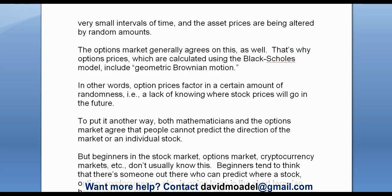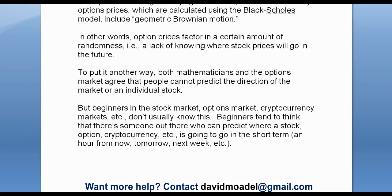The options market generally agrees on this as well. That's why options prices, which are calculated using the Black-Scholes model — you can Google that — the Black-Scholes model includes geometric Brownian Motion. In other words, option prices factor in a certain amount of randomness — a lack of knowing where stock prices will go in the future. So the options market knows this; they know that short-term movements are random, pretty much. Option prices factor in a certain amount of that randomness.